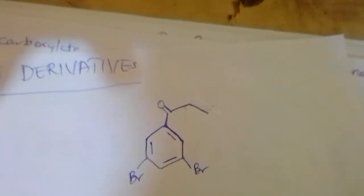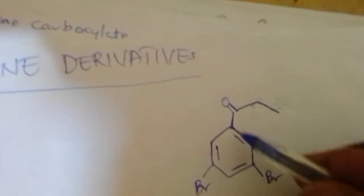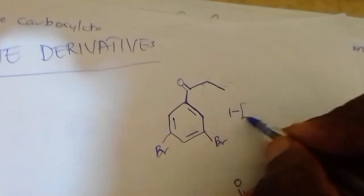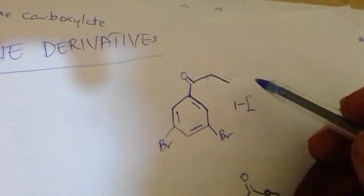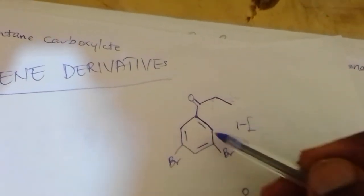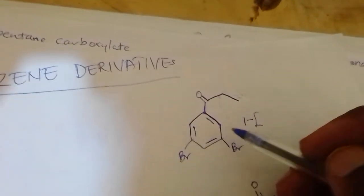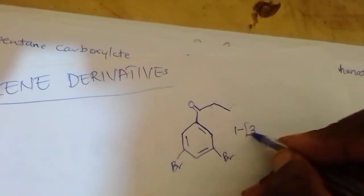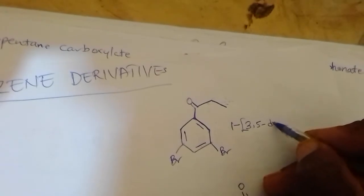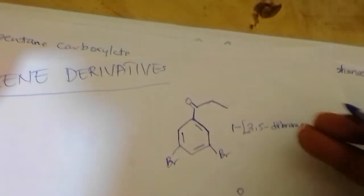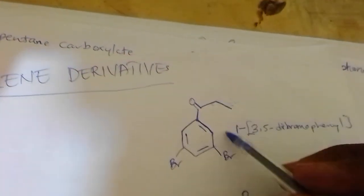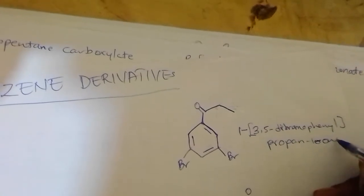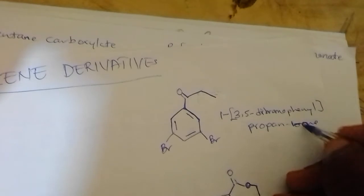Let's have this one, which is very similar to the previous. The whole phenyl group is on position 1 of the propanone. On the phenyl we have positions 1, 2, 3 — at positions 3 and 5 that's where you have the two bromines. So the name becomes 1-(3,5-dibromophenyl)propan-1-one, where 3 and 5 represent the substituent positions of the two bromines on the benzene ring.